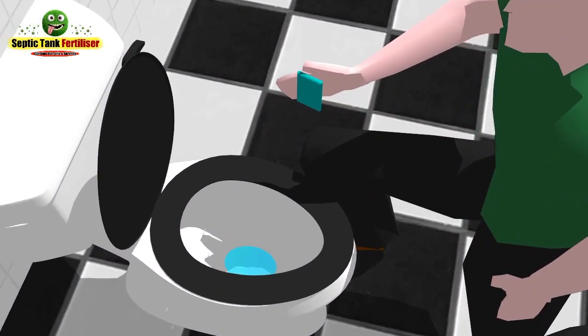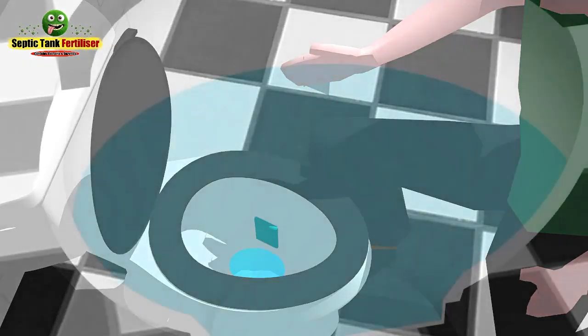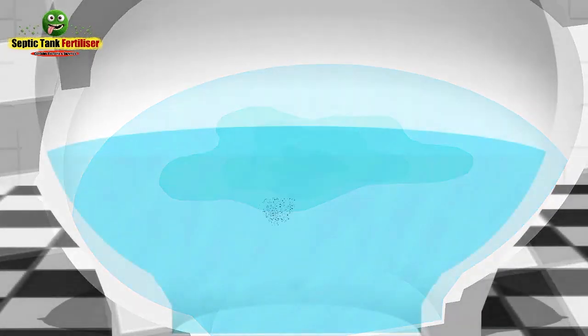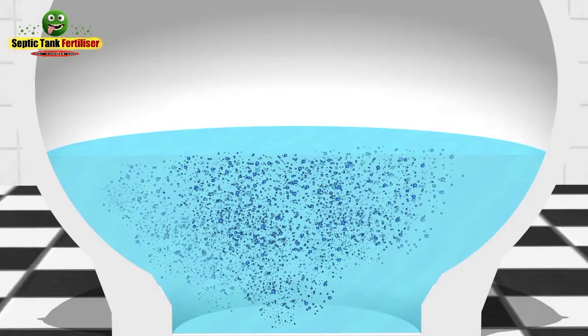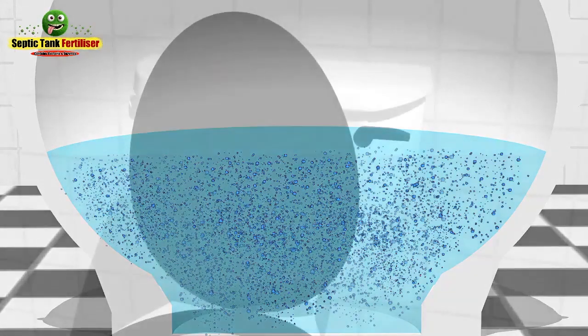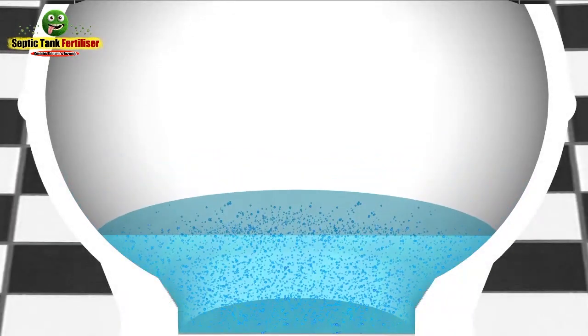How do you get Septic Tank Fertiliser into your septic tank? It's really easy. Simply drop one of the water-soluble sachets into the toilet and let it dissolve, which generally takes about 30 seconds. As it dissolves, it will release billions of organic bacteria and enzymes into the water. Once it's dissolved, then simply just flush the loo.